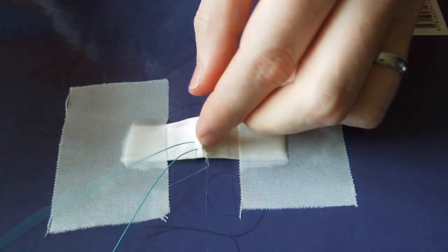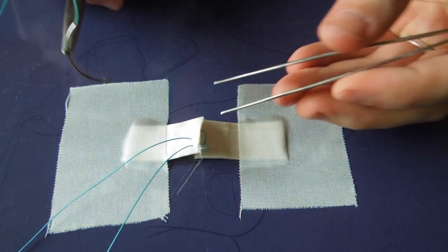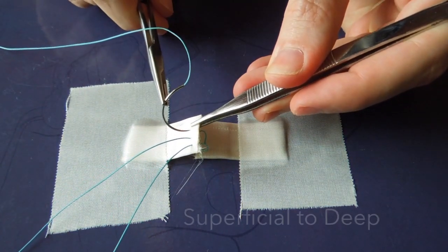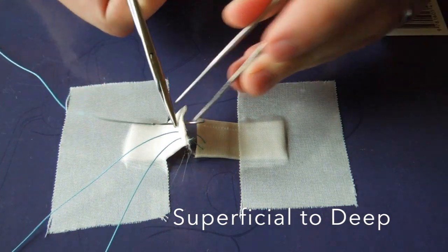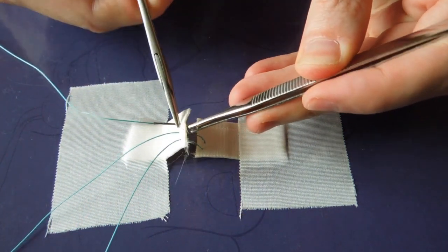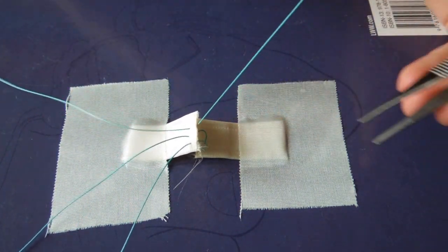This is commonly used for repairs of the plantar plate if you're doing a direct plantar approach. It's also used for Brostrom and Brostrom-Gould for ATFL repair, and it's also used for repair of the superior peroneal retinaculum.